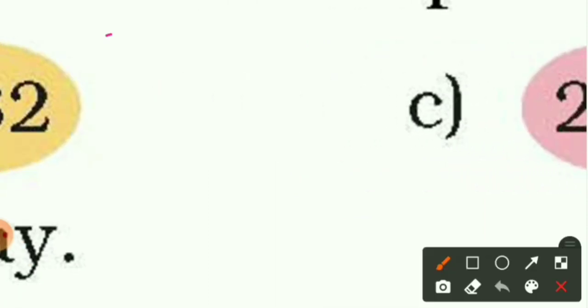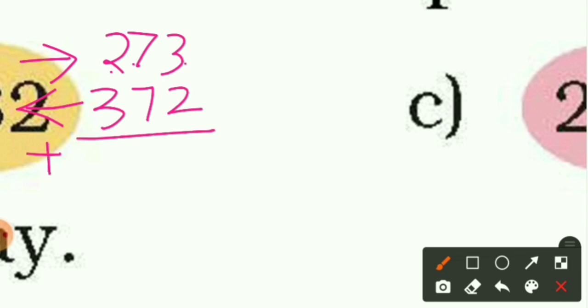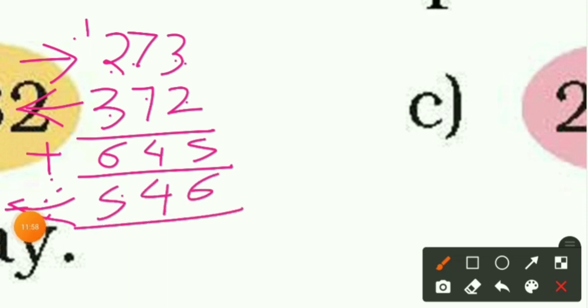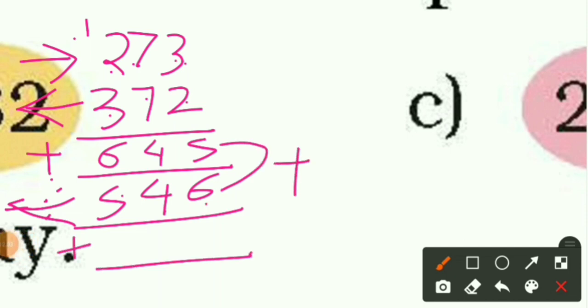Next number: 273. Reversed it reads 372. Their sum: 3 plus 2 is 5, 7 plus 7 is 14 — write 4 carry 1, and 2 plus 3 plus 1 is 6 — giving 645. Is 645 a palindrome? No. Take 645 reversed as 546, and find their sum.